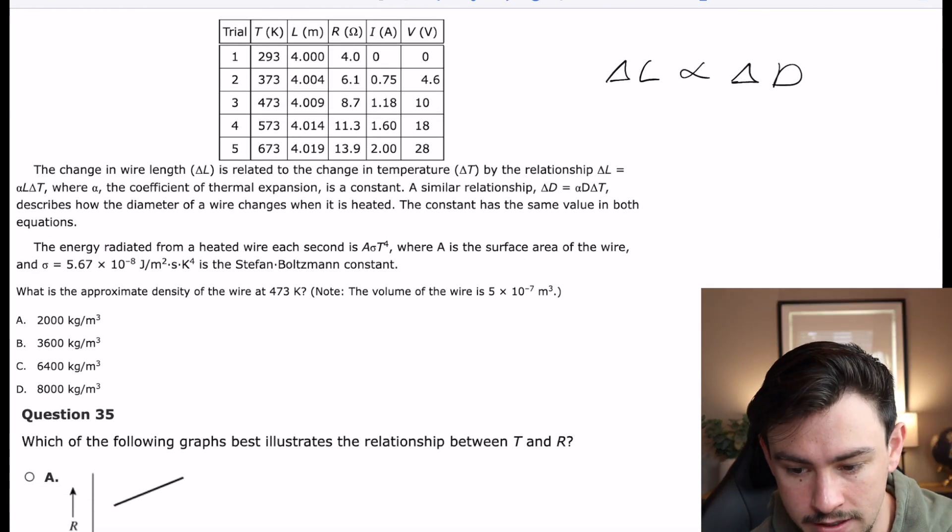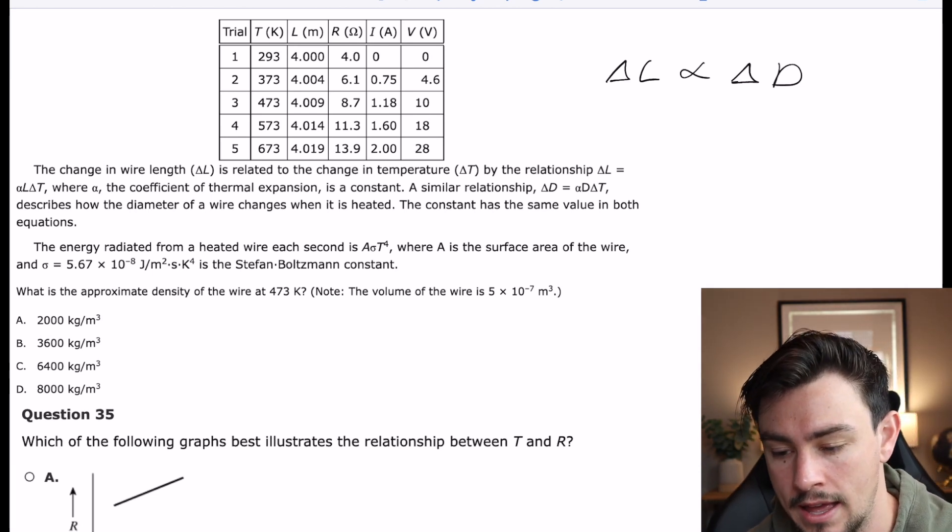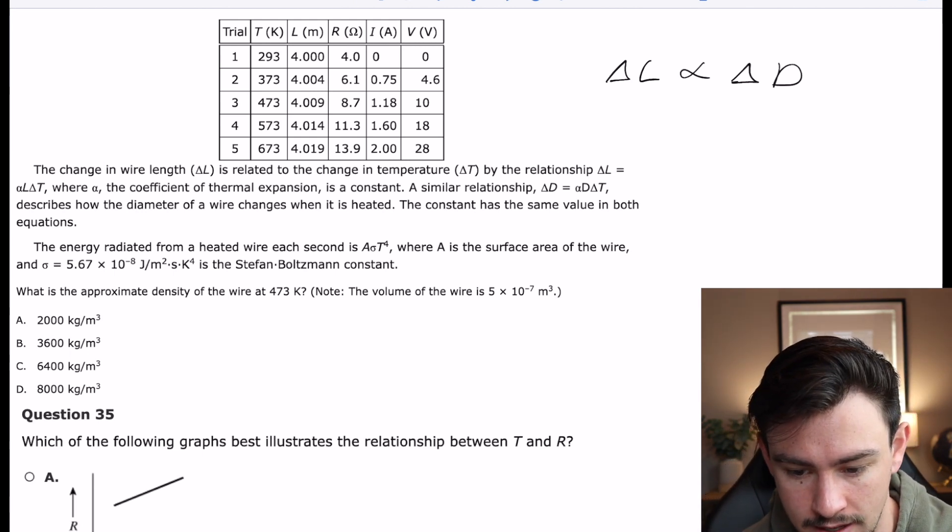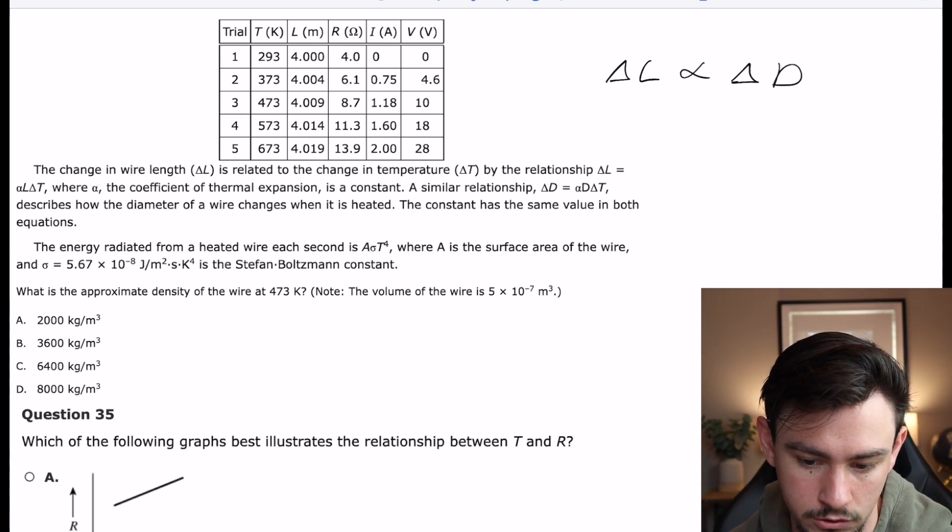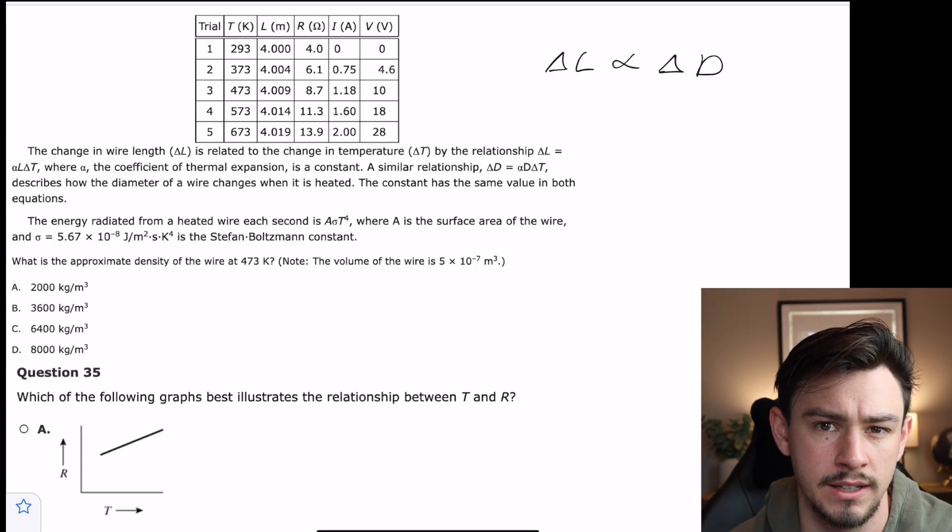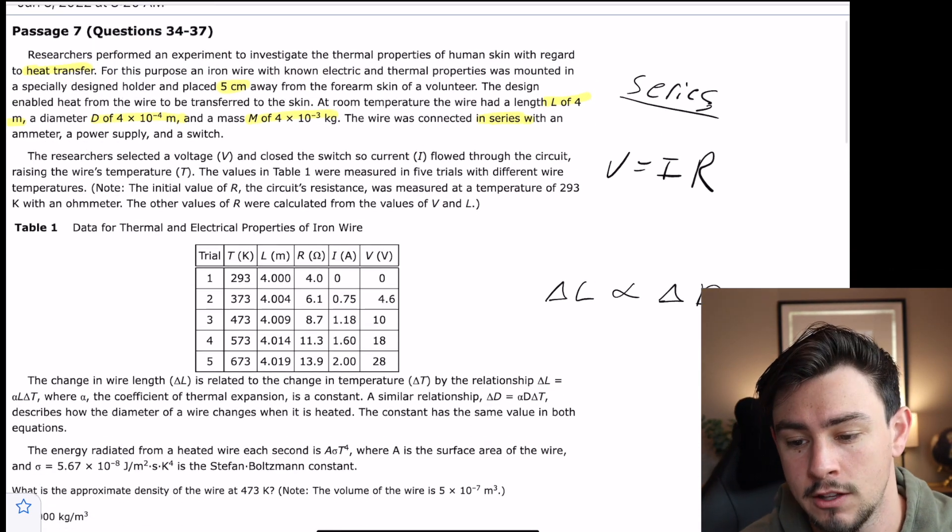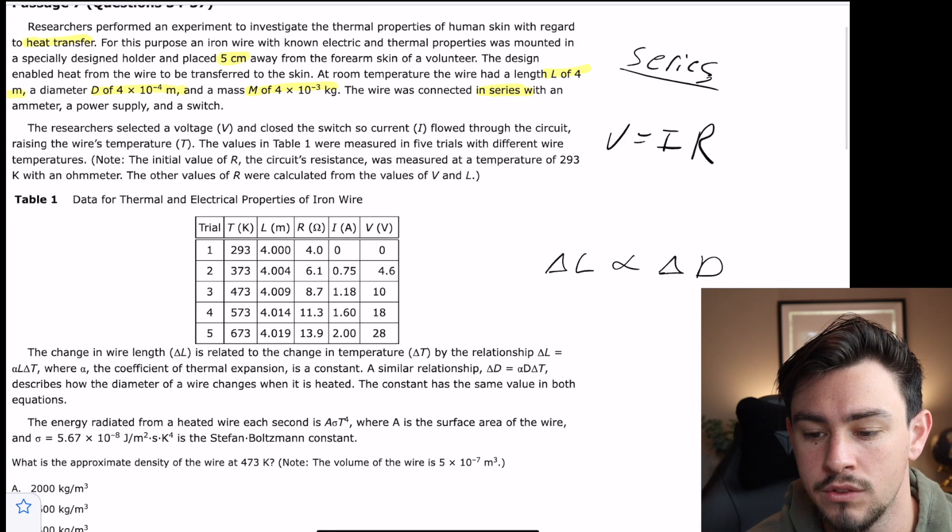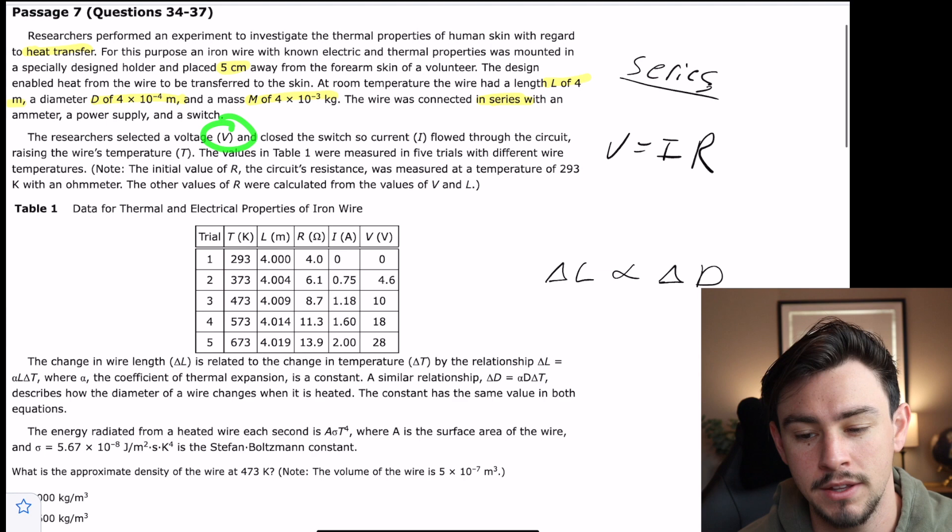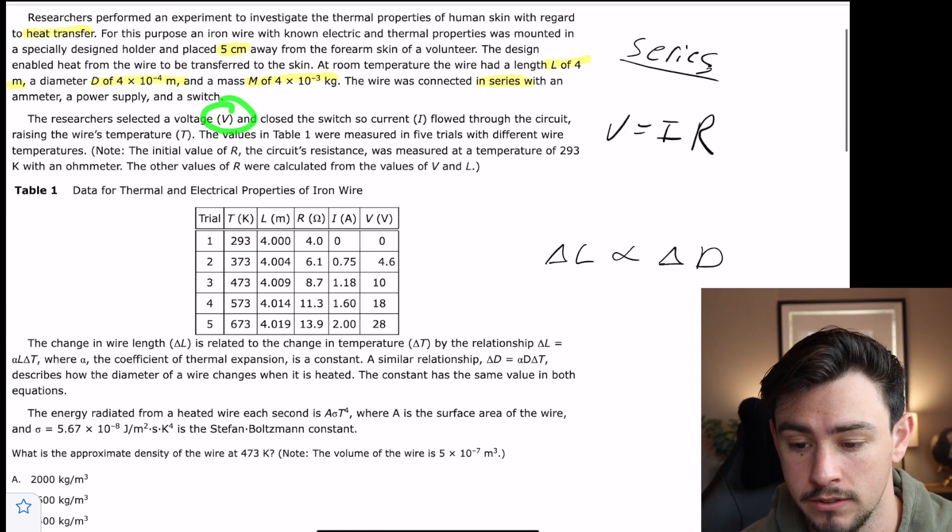Moving on, it says the energy radiated from a heated wire each second is A sigma T to the fourth, where A is the surface area of the wire, and sigma is 5.67 times 10 to the negative eighth joules per meter squared second Kelvin to the fourth is the Stefan-Boltzmann constant. Yeah, I don't really get a ton out of that. So let's go to the questions. You notice that I didn't flowchart a ton here, and that's because you can see them posturing with all these values that they're giving you, and then they're making sure to tell you what these variables are. So I'm thinking this is going to be like a very algebra-heavy question set.